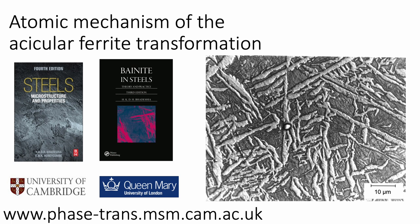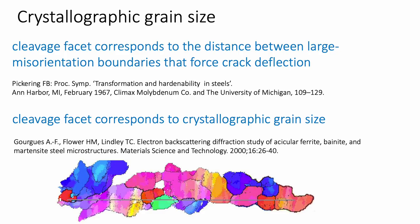What is the advantage of having this complicated structure where the plates are pointing in many different orientations? Well, many years ago there was some nice work done which showed that what matters in terms of cleavage fracture is that cleavage cracks propagate uniformly across crystallographically homogeneous regions. These regions, although they have very similar orientations within, also contain microstructure which doesn't deflect cleavage cracks. So it's the crystallographic grain size rather than the grain size measured using an optical microscope that determines cleavage cracking.